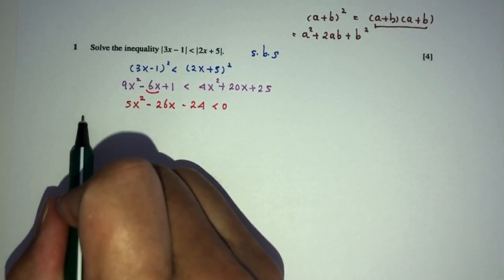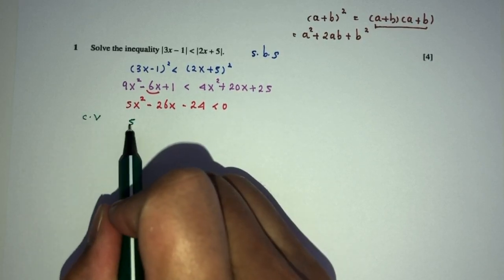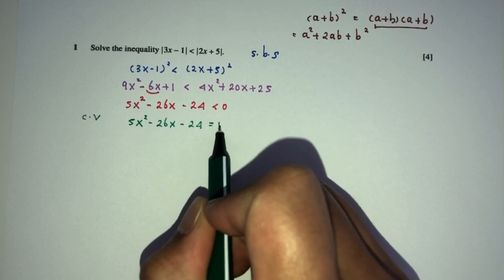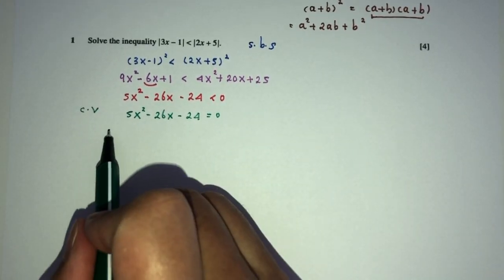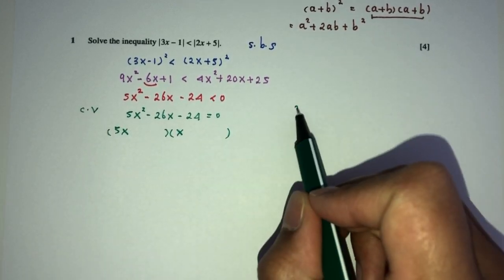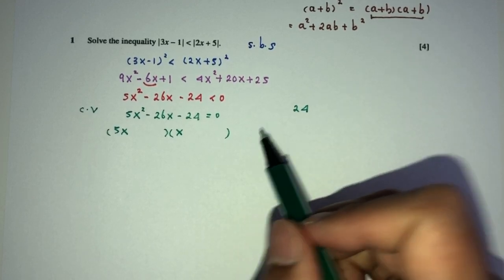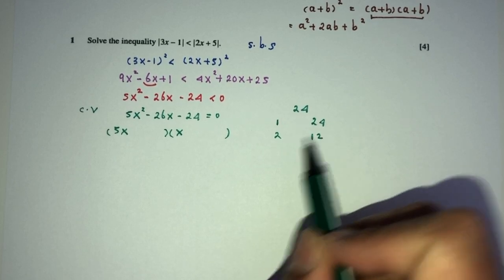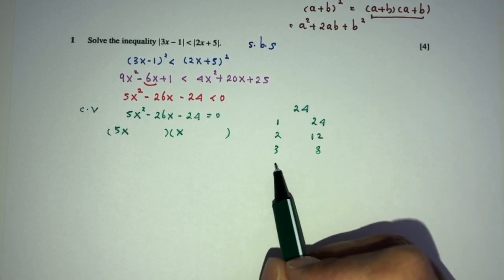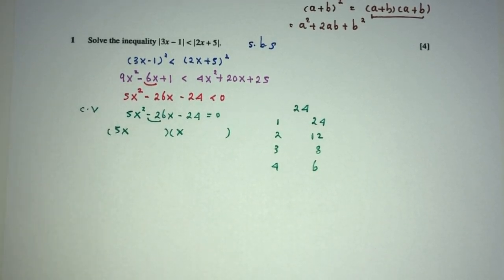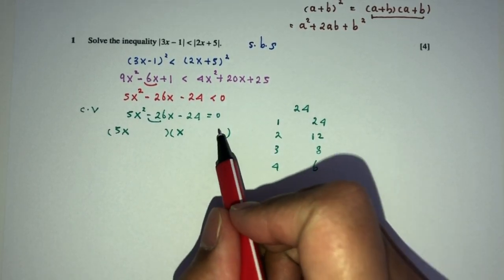Finally, we have to find the critical values. Take the same equation and equate that to 0. Now we have to factorize. 5x squared is 5x times x. For 24, we need a pair — either 1 times 24, 2 times 12, 3 times 8, or 4 times 6 — to get the value of minus 26. By observation and trial and error in my mind, I will use 6 and 4 here.